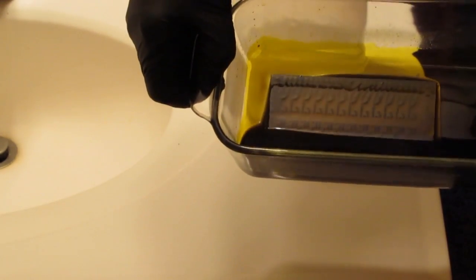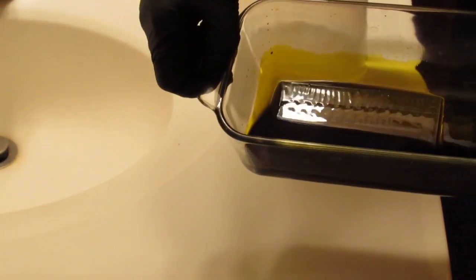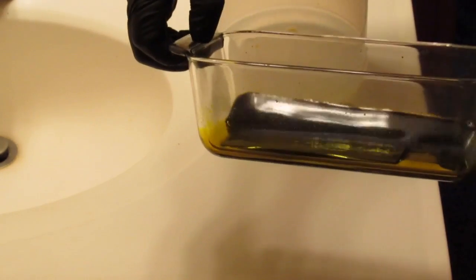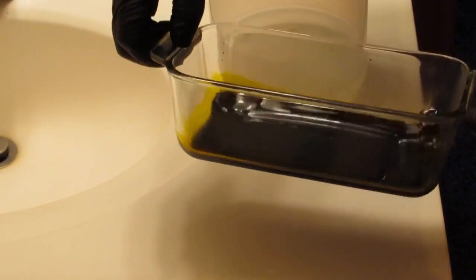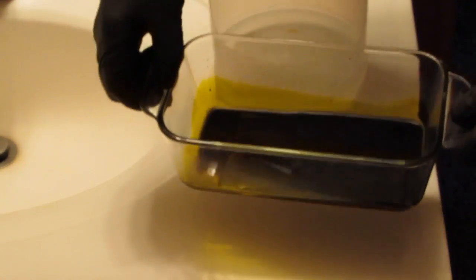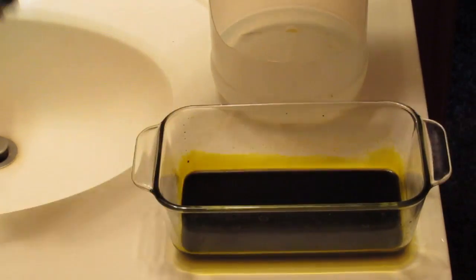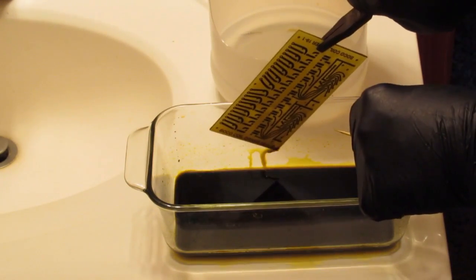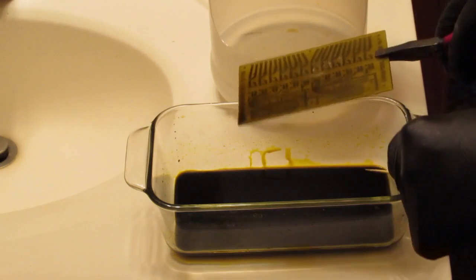I place the boards in a first-stage rinse before I scrub the masking off the board. I will dispose of the spent etchant and first-stage rinse at the county waste disposal site.